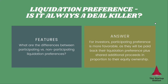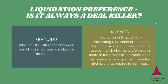A participating liquidation preference means that an investor will get both a required return of investment as well as additional proceeds in proportion to their equity ownership. So really, this is not a really good term — it's like double dipping. What's more common is a non-participating preference, where you will get either a liquidation preference, which is a minimum return on investment, or you get paid proportionate to your equity proceeds. Here you can choose whichever payout gets you more, but it's still better than the previous option where an investor will get both.